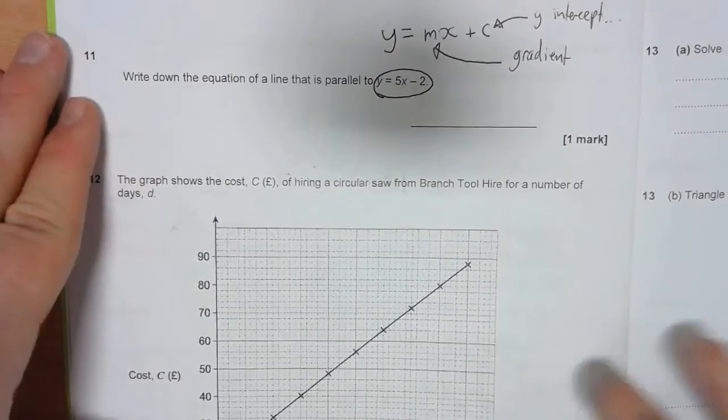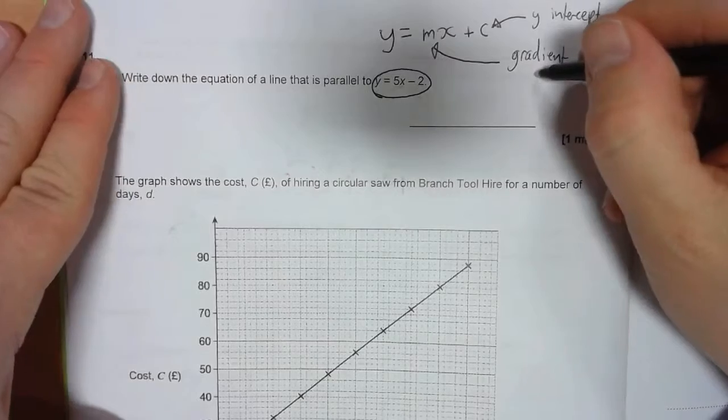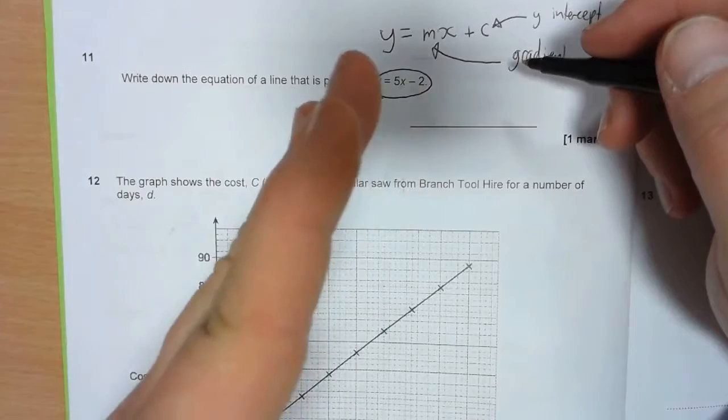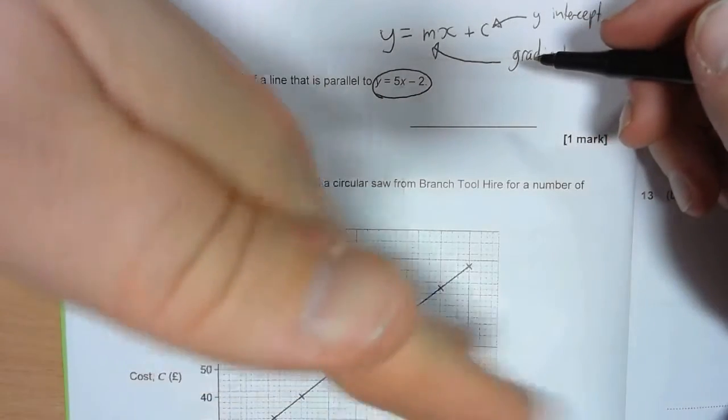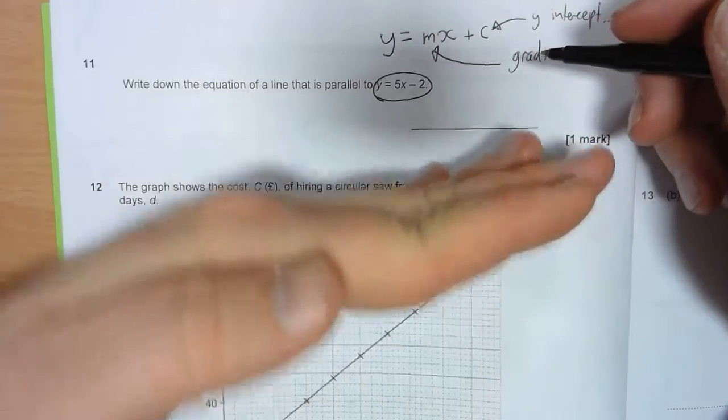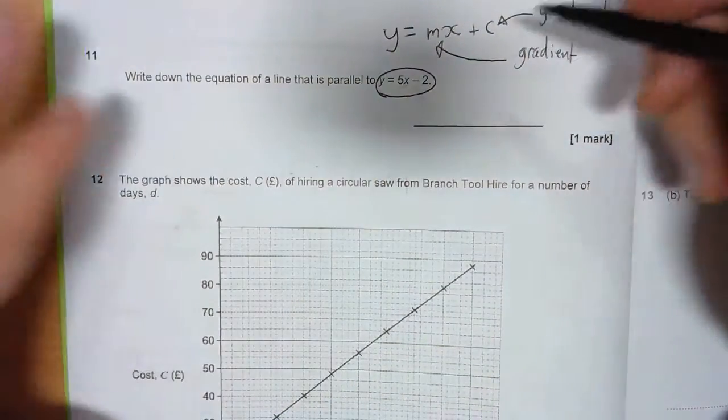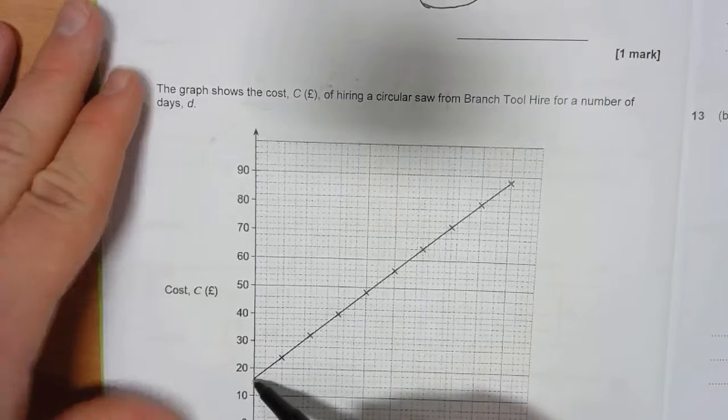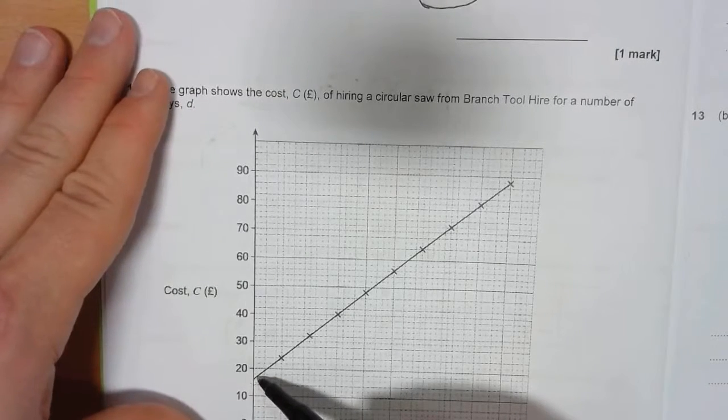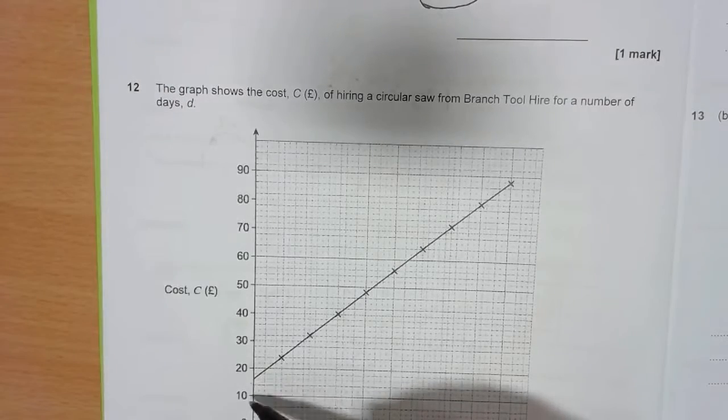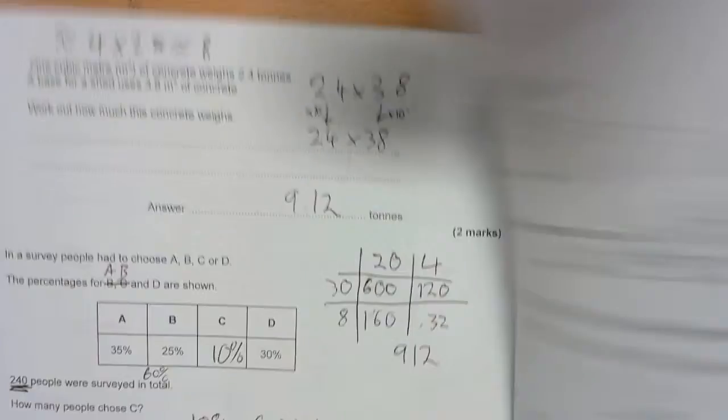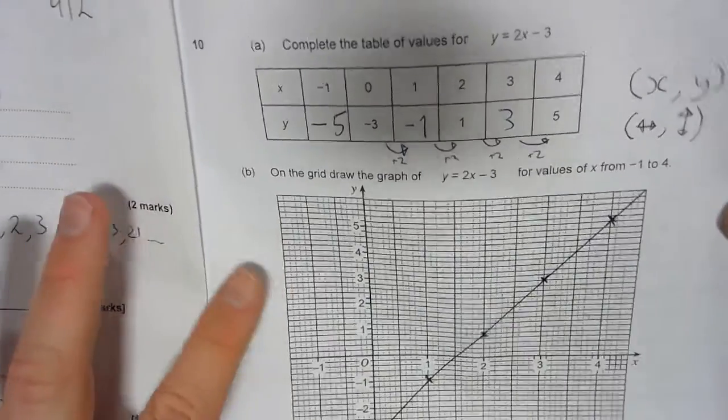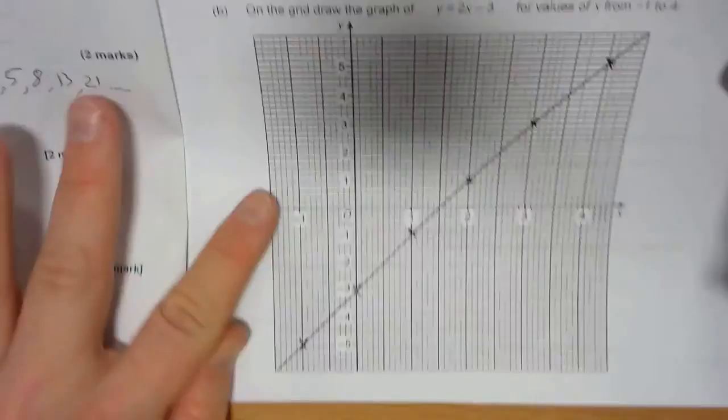So the gradient is the slope of a graph, whether it's like that, or like that, or like that, negative sloping. The gradient is the slope of the graph, and the y-intercept is where it crosses the y-axis. So here, the y-intercept would be 16, which we're going to look at in question 12. Here, the y-intercept would be minus 3.